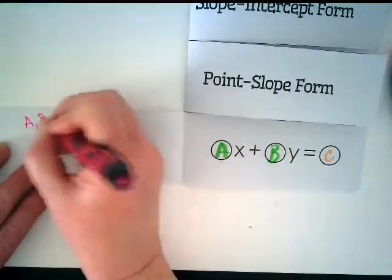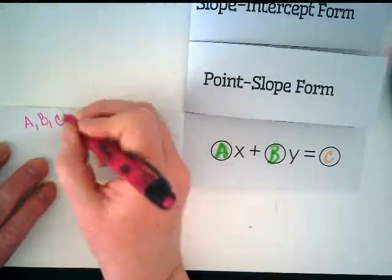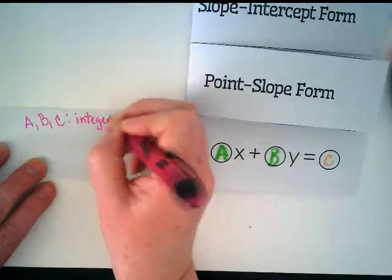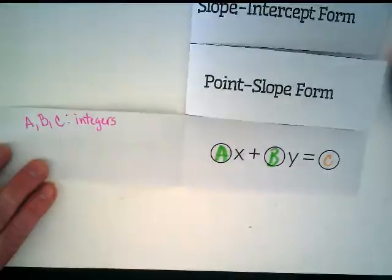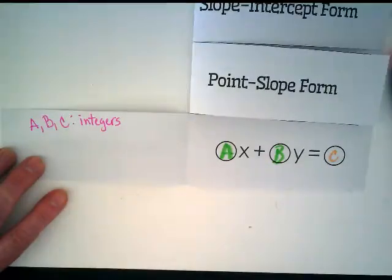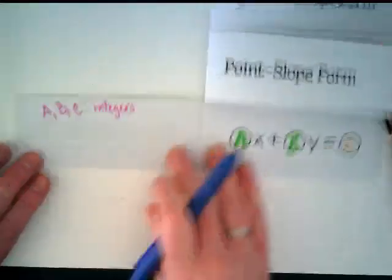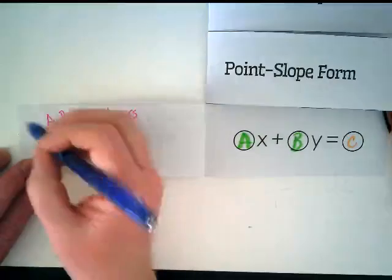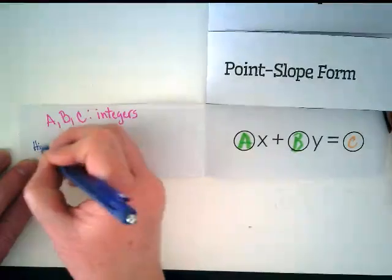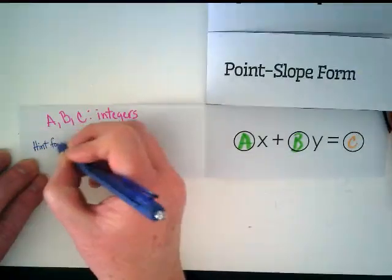A, B, and C are integers. You won't find decimals with these. They'll be integers.